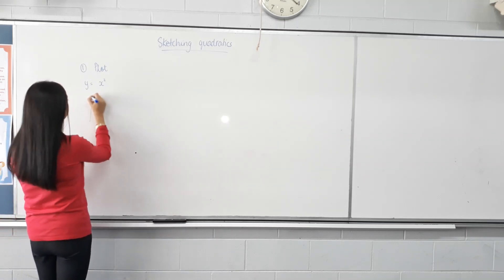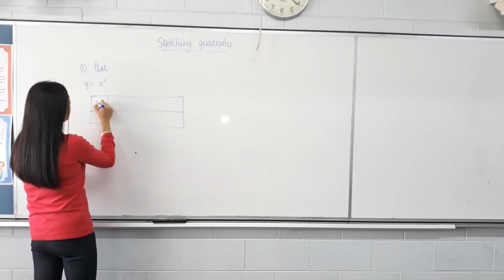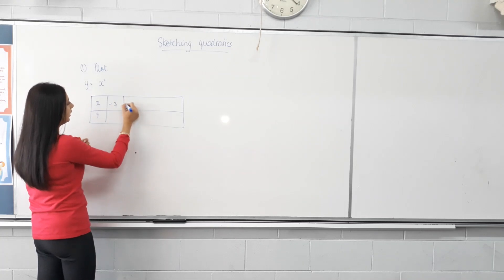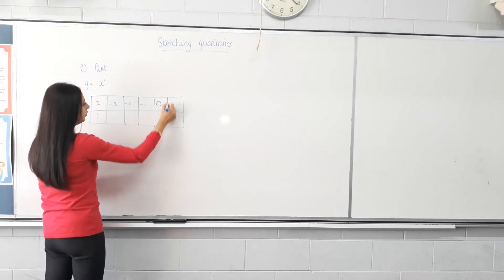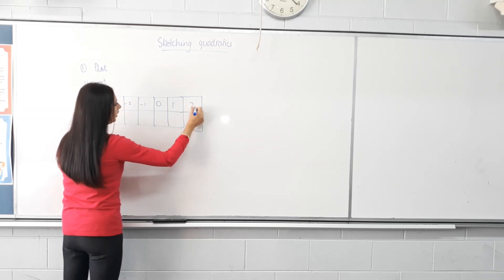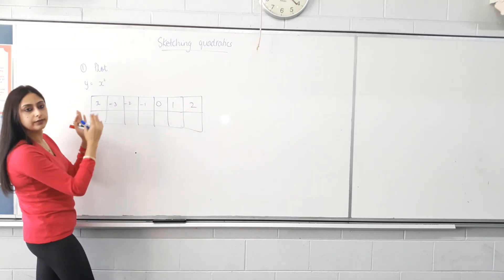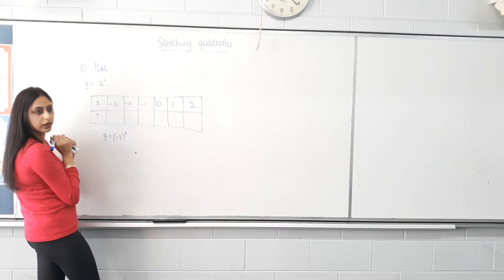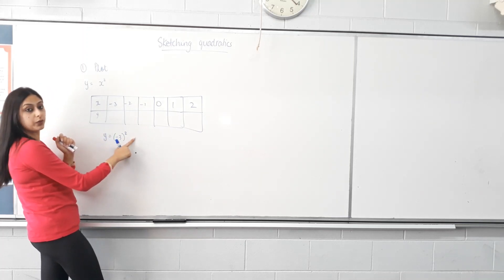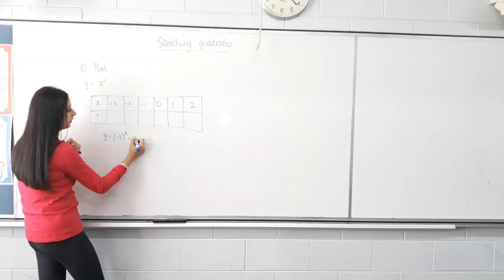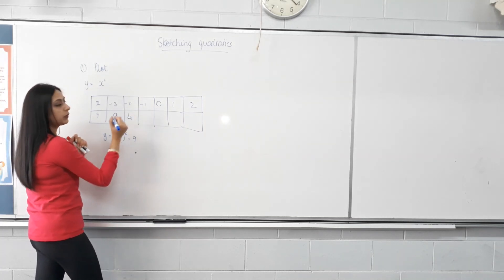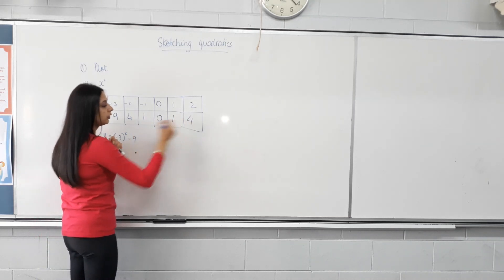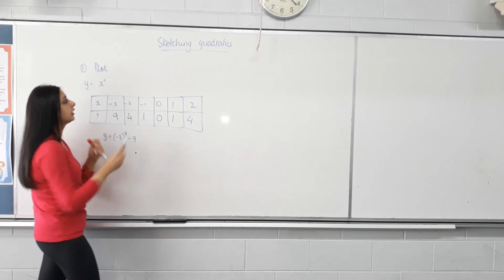So for plotting, choose some values of x: negative 3, negative 2, negative 1, 0, 1, and 2. Then find the values of y. If x is negative 3, what's negative 3 squared? It's negative 3 times negative 3, which is 9. What will negative 2 squared be? Negative 1 squared? 0 squared? 1 squared? 2 squared? We've got enough points — let's plot them.